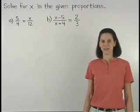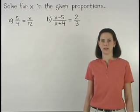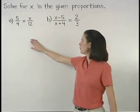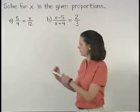To solve for x in each proportion, we simply use the means extremes property. So, in part A, since 5 over 4 equals x over 12, we know that the product of the extremes,